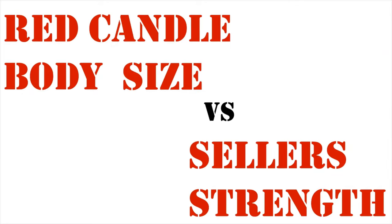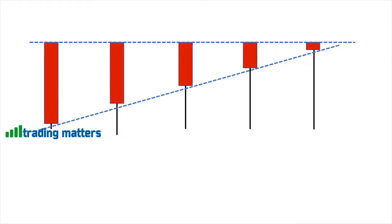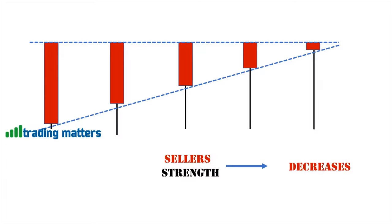Red candle body size versus seller strength. Just like the green candles, joining the opens and closes of red candles from left to right, body size is decreasing. With a decrease in body size, seller strength also decreases. If seller body size increases, seller strength also increases.